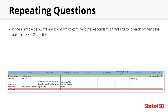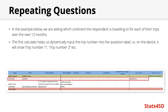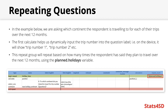In this example, we are asking which continent the respondent is travelling to for each of their trips over the next 12 months. The first calculator in this repeat group helps us to dynamically input the trip number into the question label — so on a mobile device it will say 'trip number one' or 'trip number two' rather than dollar position. This will repeat depending on however many times the person says they intend to travel over the next 12 months, and we have referenced the plan.holidays variable within the repeat count column.